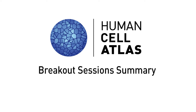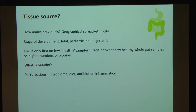So what did we discuss? I think we had the same type of discussion as everybody this morning for every tissue. The main first discussion is what the tissue source — do you go for full organs from maybe transplant or post-mortem tissue? Of course, how many individuals, and to address the geographical spread and ethnicity?